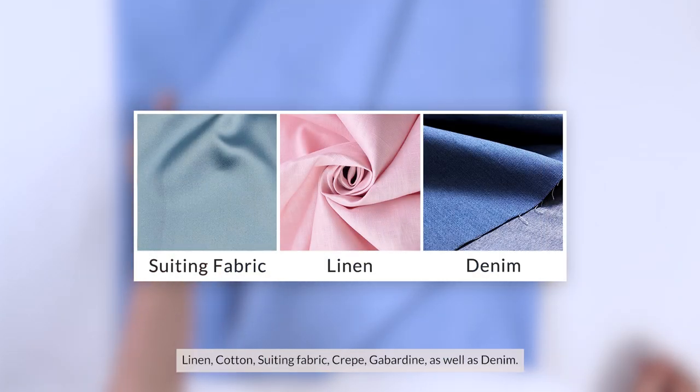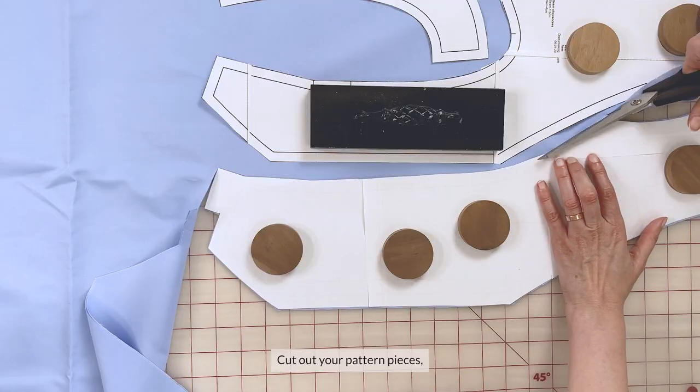For this vest I went with this pretty light blue poplin fabric, and I recommend using a light to medium weight fabric that holds its shape, won't stretch out, and won't be see through, as we want the option of wearing this vest on its own. Some good fabric choices would be linen, cotton, suiting fabric, crepe, gabardine, as well as the lightweight denim.